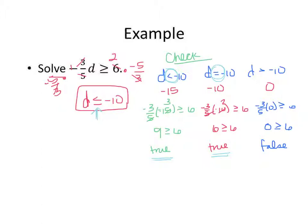If it says to graph it, remember at least one number on either side. This one is a closed circle on negative 10 because it has the equal to part, and then since we want all numbers less than negative 10, you draw your arrow to the left.